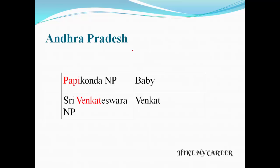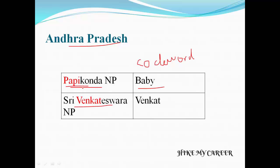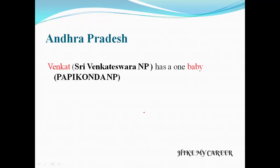Next we are going to see about Andhra Pradesh. There are two national parks in Andhra Pradesh: Papikonda National Park and Sri Venkateswara National Park. Code word for Papikonda is BABY, and Sri Venkateswara National Park code word is VENKAT. The story is: Venkat has one baby. So Venkat means Sri Venkateswara National Park, and baby means Papikonda National Park.